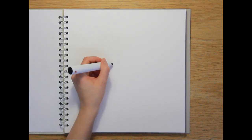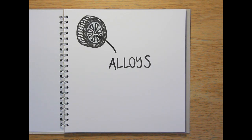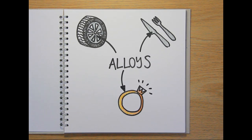Almost every piece of metal we use in our daily lives is an alloy, whether it's the wheels of our cars, the cutlery we eat with, or even the jewelry we wear. But what are alloys, and how are they made?